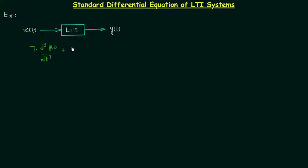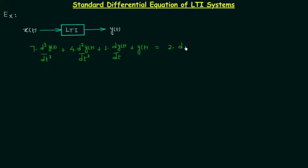The second term is four times the second derivative of output y(t). After this we have one times the first derivative of output y(t), d y(t)/dt. After this we have the output y(t) itself. So we are done with the left hand side. On the right hand side we have the input x(t) and its derivatives: two times the first derivative of input x(t) plus the input x(t) itself. So this is the equation for this LTI system.